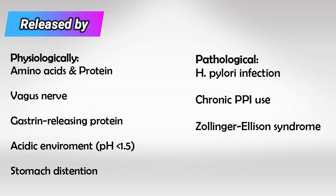Pathologically, we have high gastrin levels in Helicobacter pylori infection, in chronic PPI use, and in Zollinger-Ellison syndrome.